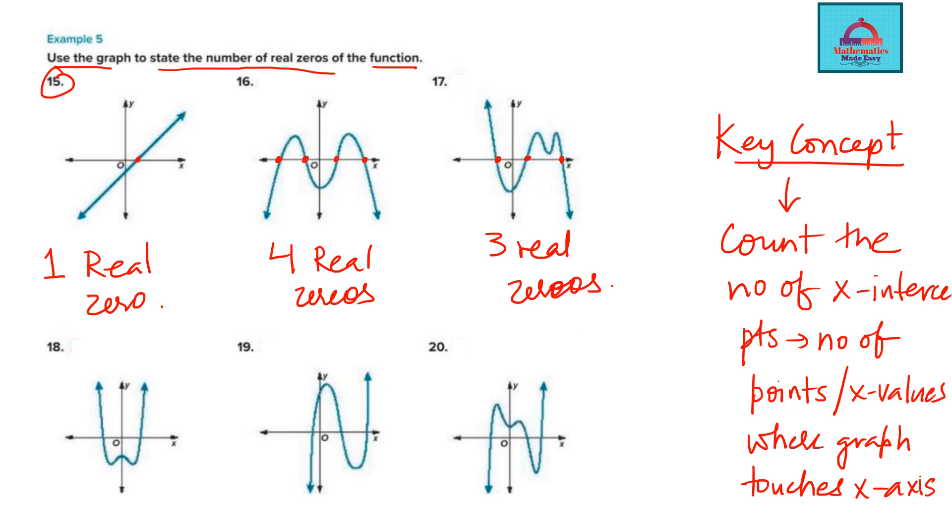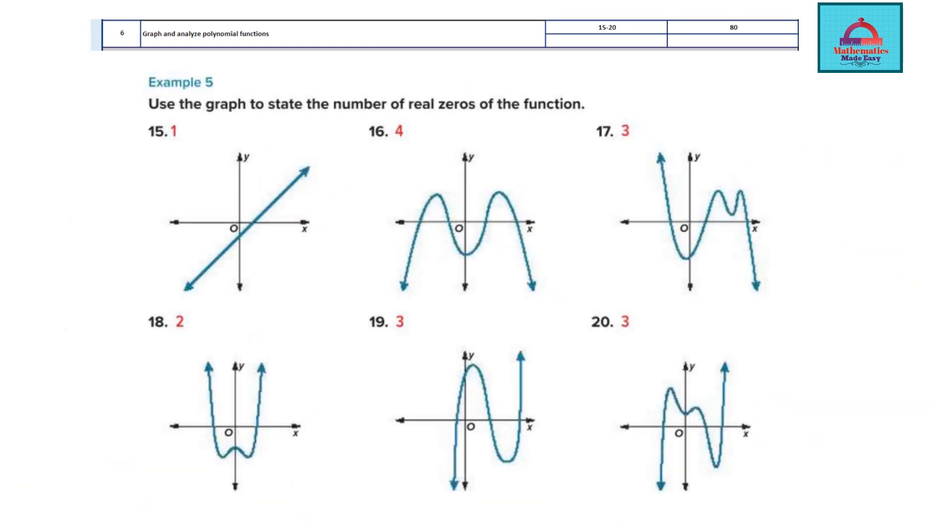Now I want you to try questions 18, 19, 20 similarly. Count the number of real zeros and tell me your answer. Let's check: 1, 2 - this question has 2 real zeros. This one has 1, 2, 3 - 3 real zeros. This one has 1, 2, 3 - 3 real zeros. And this one has 1, 2, 3 - again 3 real zeros. That completes this. This is the answer key for questions 15 to 20. You can check your answers now.